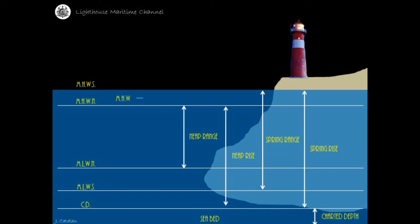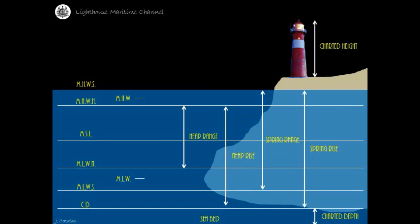Mean high water is the average height of all high waters over a 19-year period. Mean low water is the average height of all low waters at a given place; about half of the low waters fall below it and half above. Mean sea level is the average height of the surface of the sea for all stages of the tide over a 19-year period; this may differ slightly from half tide level, which is the level midway between mean high water and mean low water. Charted height is measured above the mean high water spring.